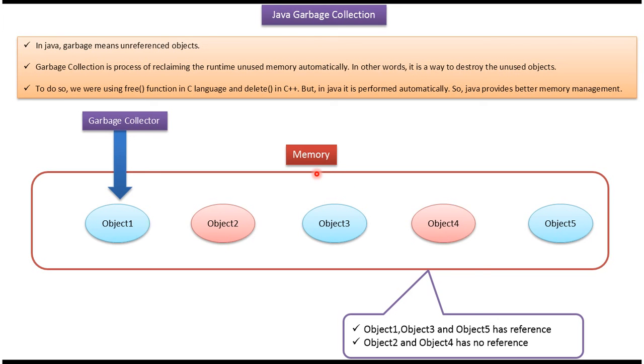Here you can see memory. In memory, there are 5 objects. Of those 5 objects, 3 objects have references and 2 objects do not have any reference.